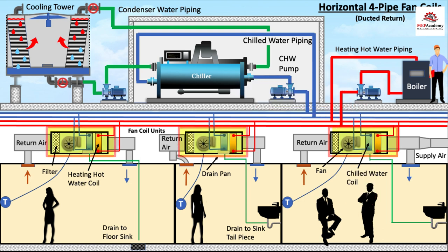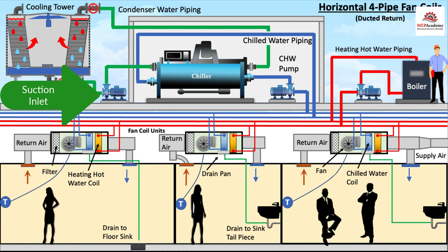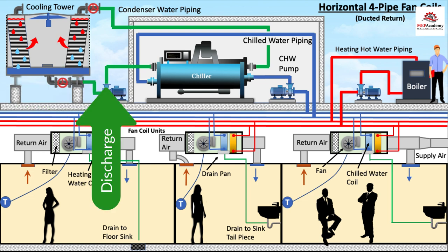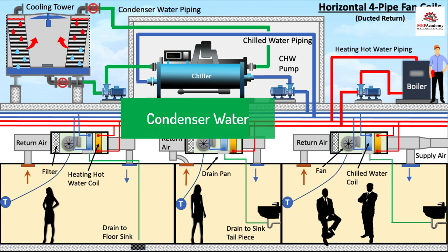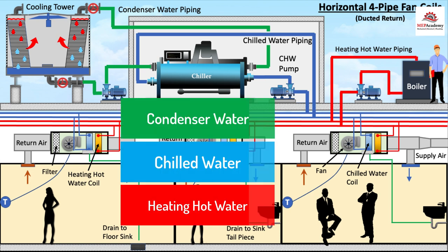And then on the condenser water, you have condenser water end suction pump. It's sucking water from the basin of the cooling tower, through the pump, through the impeller, out the discharge, into the chiller, and then out of the chiller to the top of the tower. So you have three different systems using the centrifugal pumps. You have the condenser water, chilled water, and heating hot water, the three most common systems you'll find in HVAC.